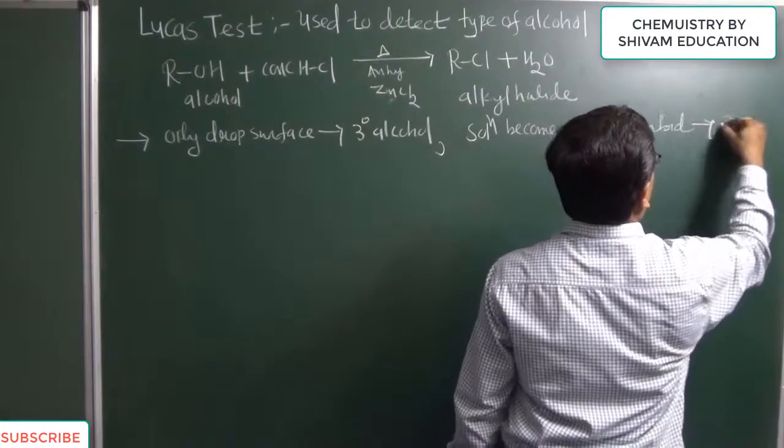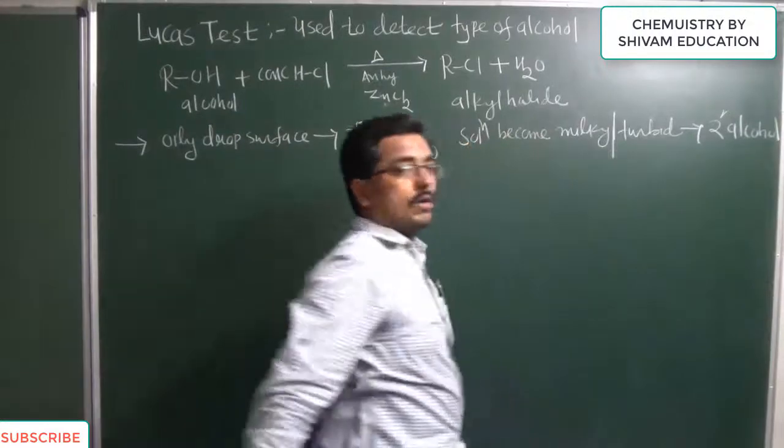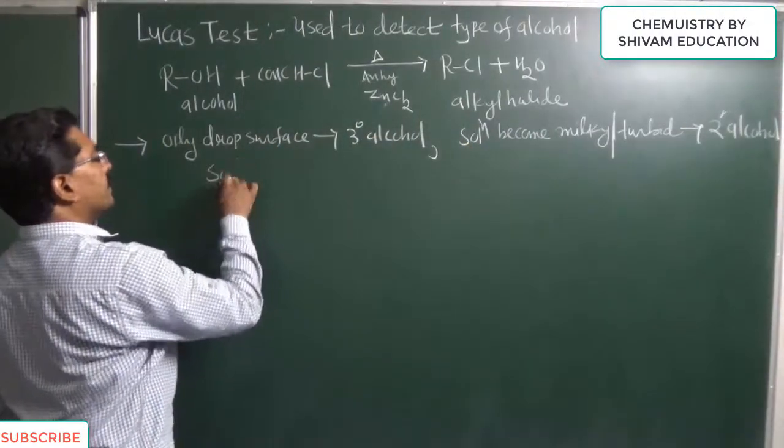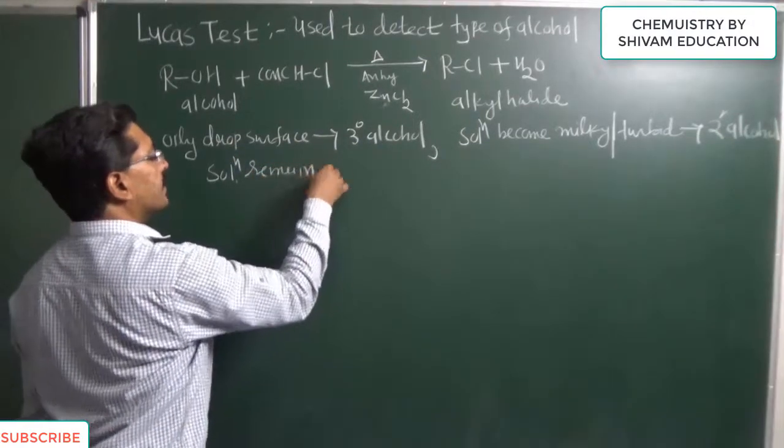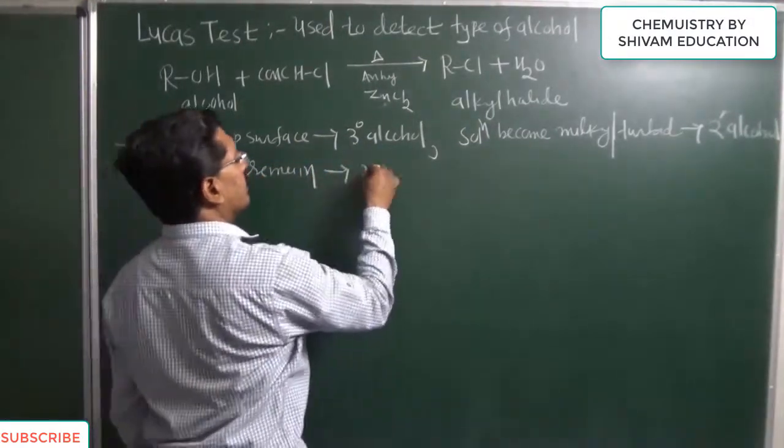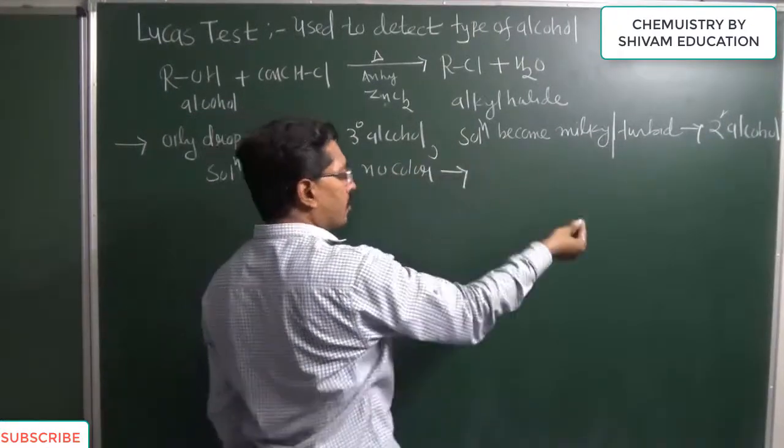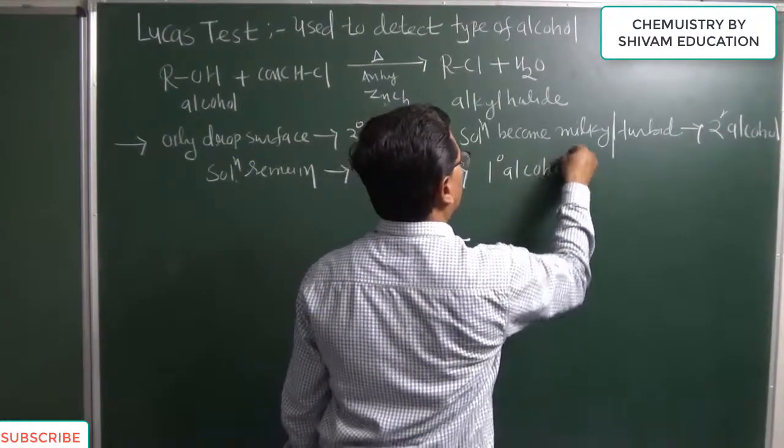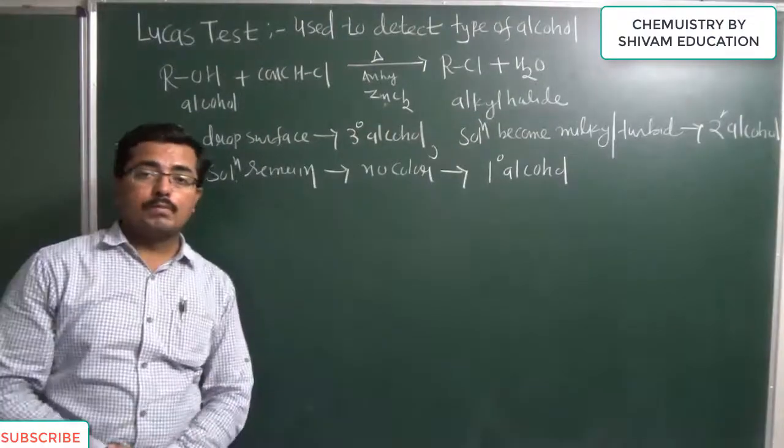That type of alcohol is secondary alcohol. Or if solution remains transparent, if solution remains transparent it means no color or no droplets, then type of alcohol is primary alcohol. So what is the type of alcohol? This we can predict with help of Lucas test.